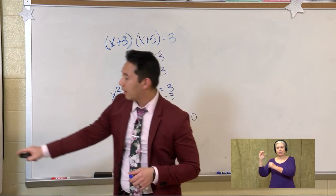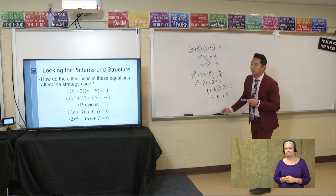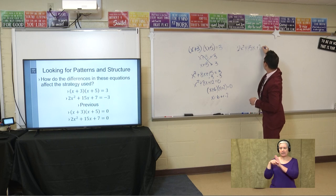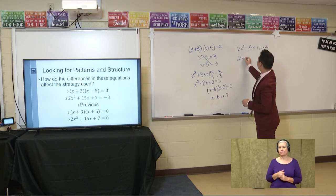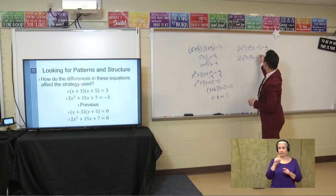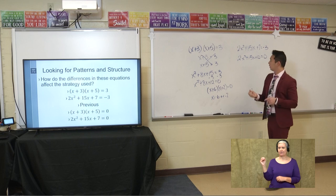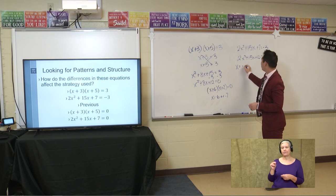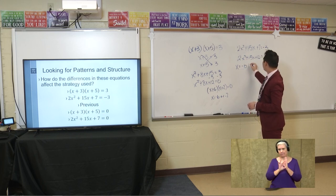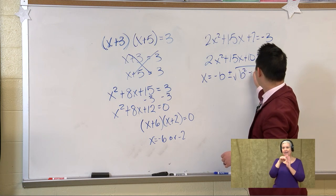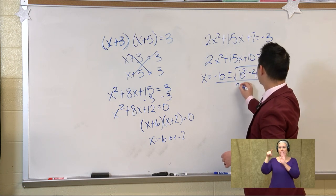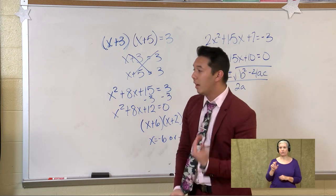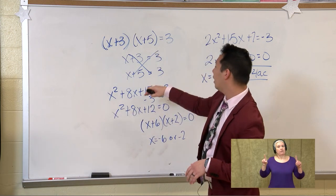For the second equation, 2x squared plus 15x plus 7 is equal to negative 3, we add 3 to both sides to get 2x squared plus 15x plus 10 is equal to 0. This doesn't factor, so we have to employ the quadratic formula: x is equal to negative b plus or minus the square root of b squared minus 4ac, all over 2a. Substituting those values gives a very different strategy than when we could factor directly.